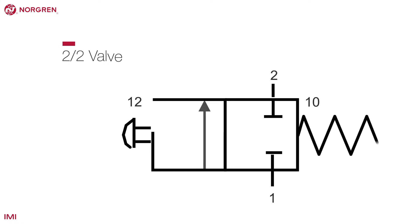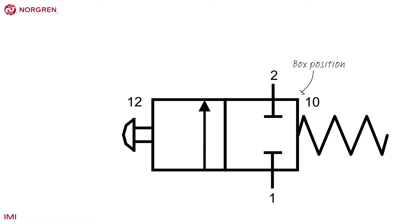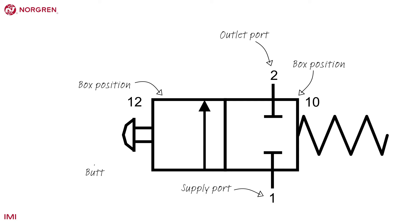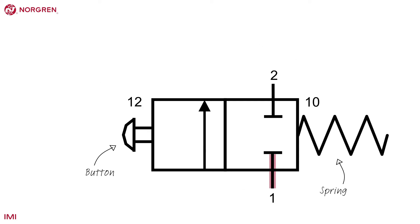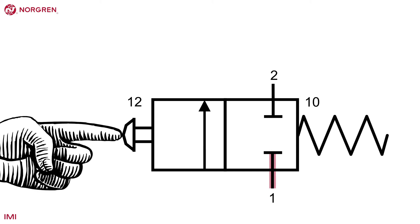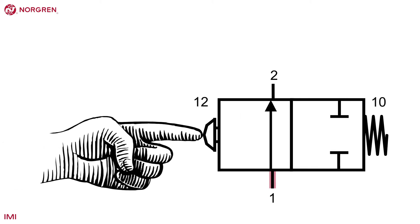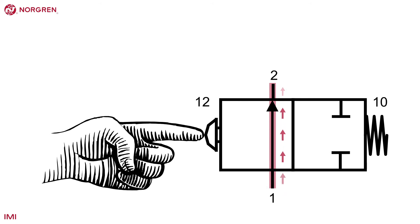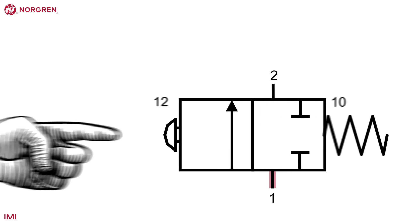This is the symbol for a 2-2 valve that you may see on a system diagram. Each box represents a position and each number represents a port. The illustration also includes a button and a spring. In position 1, no air will flow — often called the zero position and illustrated with a T-shape. In position 2, air flows from port 1 to port 2, as illustrated with an arrow.